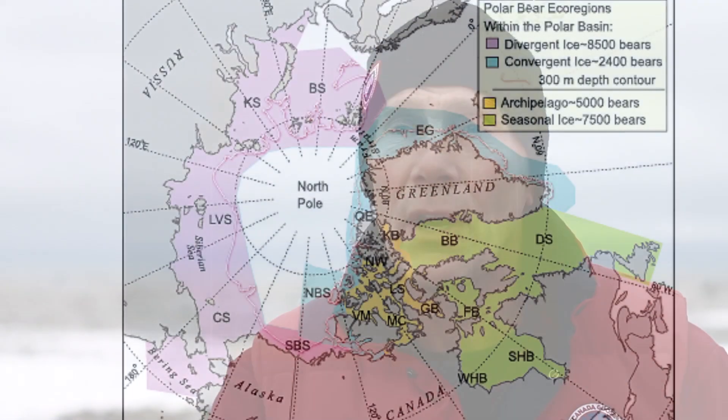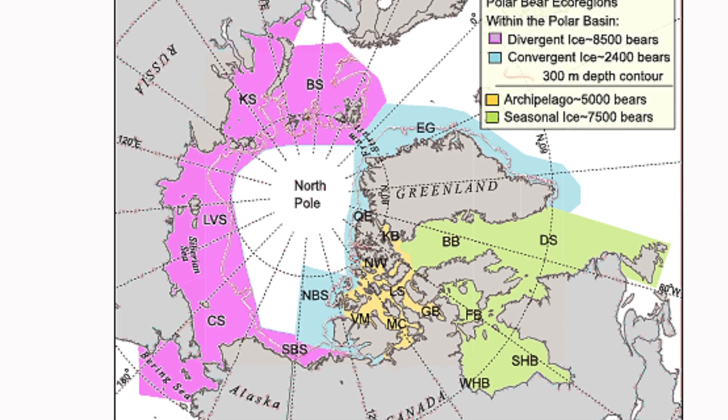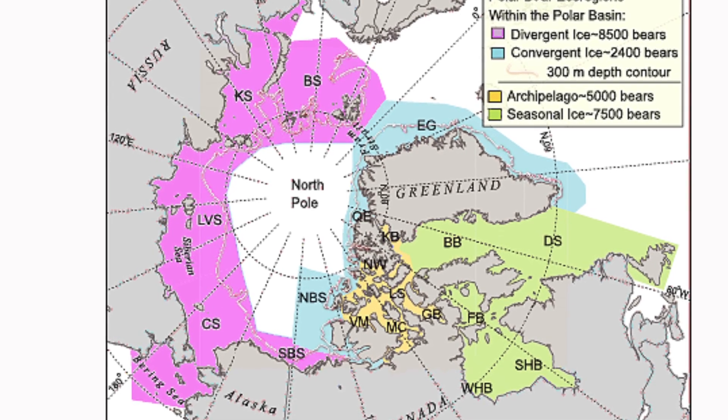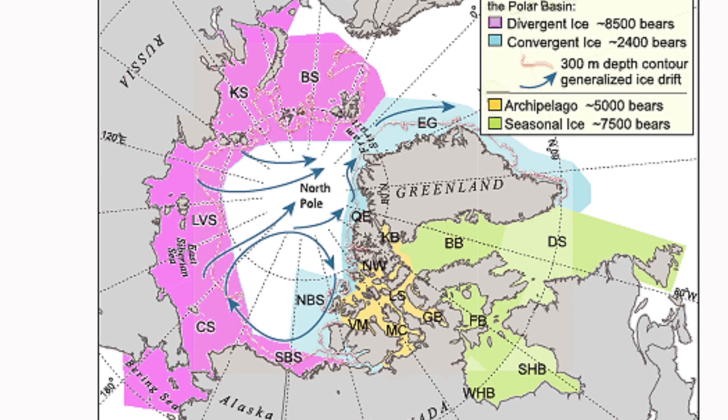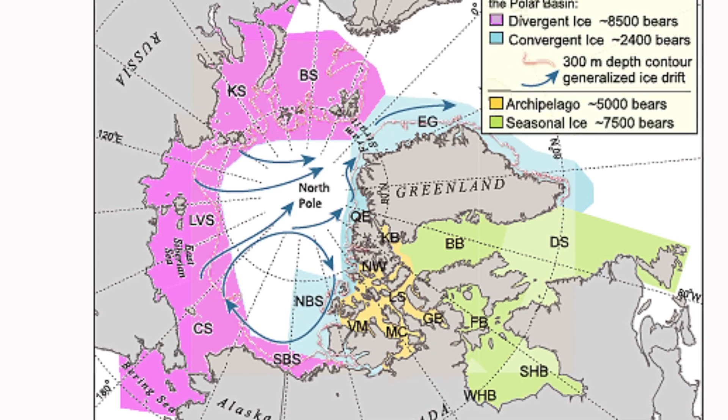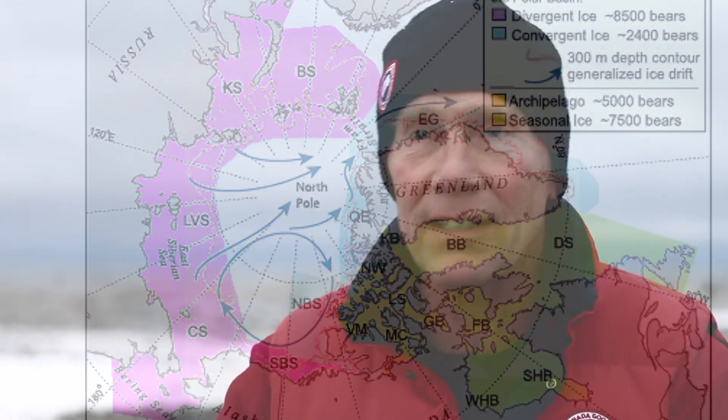One is the divergent ice ecoregion. That starts in Alaska and northwestern Canada and rings all the way around to the north of Russia and around to Svalbard. It's an area where sea ice forms actively throughout the winter, but as it's forming it's continually being moved or advected out into the center of the polar basin or beyond — through Fram Strait and actually leaving the Arctic entirely.